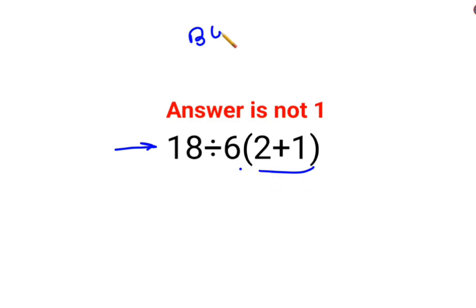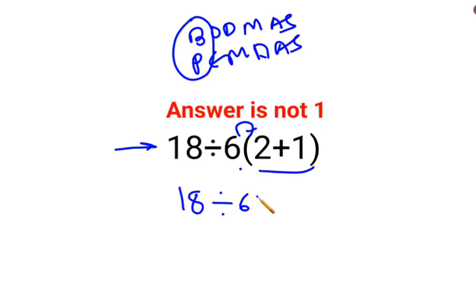Please remember while solving these sums we need to follow the acronyms of BODMAS or PEMDAS, whatever works for you. In both cases we need to give highest importance to the brackets first. So we will keep 18 divided by 6 as it is. There is no sign between the 6 and the brackets so it is multiplication, and 2 plus 1 is 3.